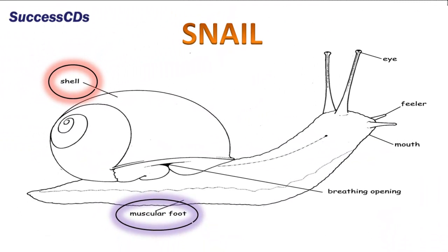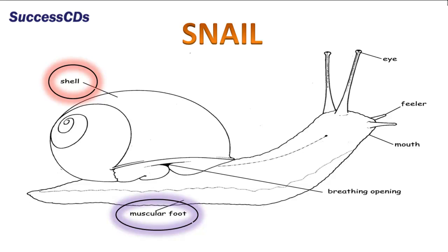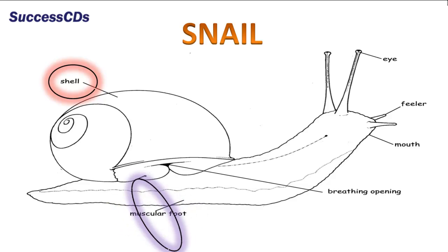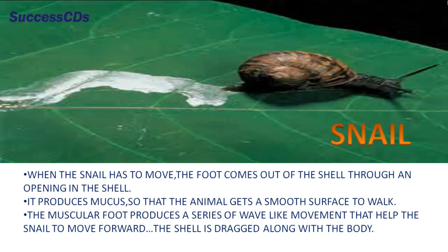Snails are famous for their slow movement. Snails have a protective shell on their back, which is actually the exoskeleton. The snail has a soft body and a thick flat muscular foot. When the snail has to move, the foot comes out of the shell through an opening. It produces mucus so that the animal gets a smooth surface to walk. The muscular foot produces a wave-like movement that helps the snail to move forward, while the shell is dragged along with the body.